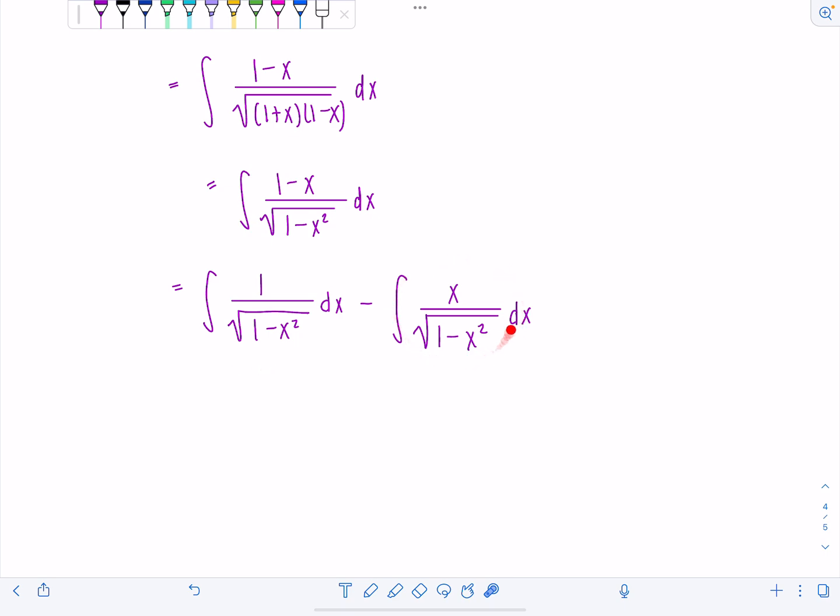The second integral, we're just going to use a u substitution. Notice here the radicand, the expression under the radical sign is squared. And here's x to the first. So perfect time to do u sub. So we're just going to let u equal one minus x squared. Du would be negative two x dx. So I have negative one half du equals x dx, which is exactly what we have right here.